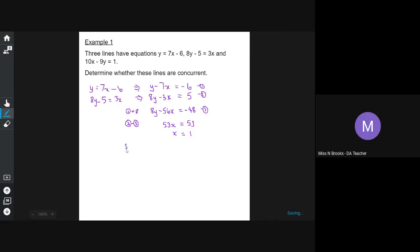Now we need to work out what the y coordinate is, so we're going to sub x equals 1 in equation 1. So y minus 7 times 1 equals negative 6. So we're going to add that 7 on, so y equals 1. So we know that these two lines intersect at 1, 1.